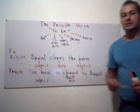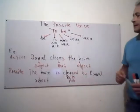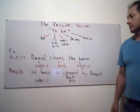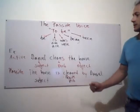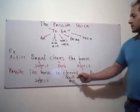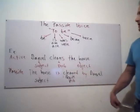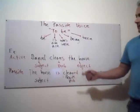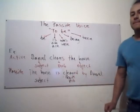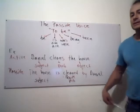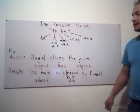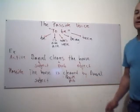If you need to change this example into other passive voice forms, you can do it in this way. For example, in simple past: the house was cleaned by Daniel. If you are going to change it into present continuous, you have to do it in this way: the house is being cleaned by Daniel.